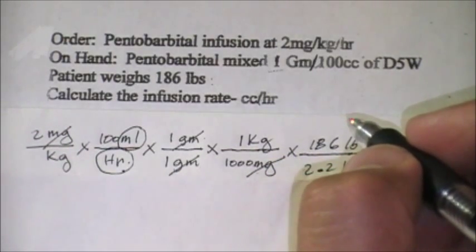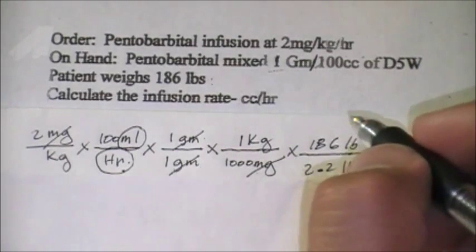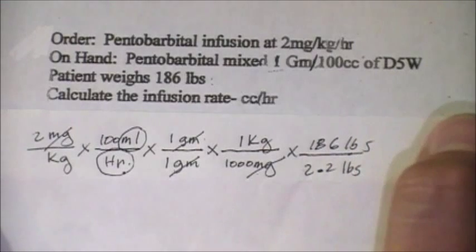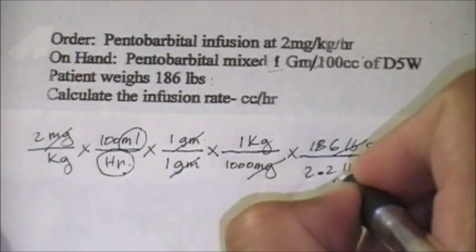If we're going to compute, 186 pounds divided by 2.2 is equivalent to 84.54 kilograms. But we just have to cancel everything—we could also do that, but I think this one is the easiest way.